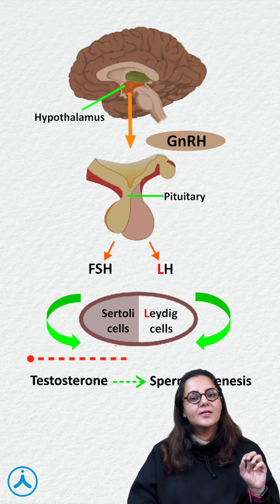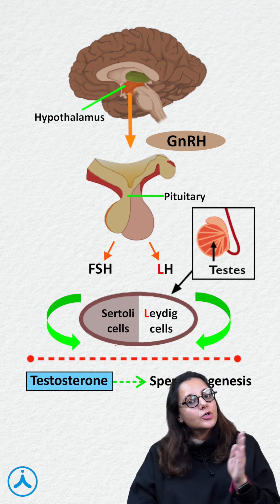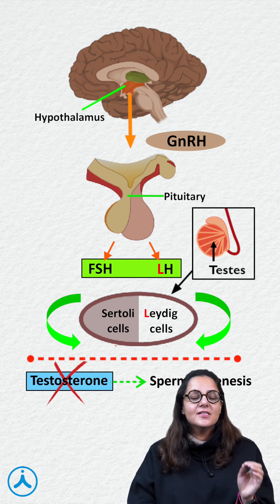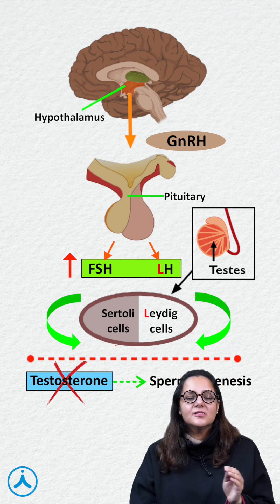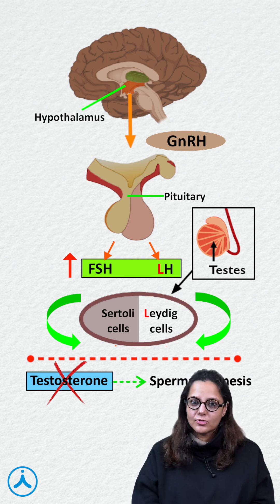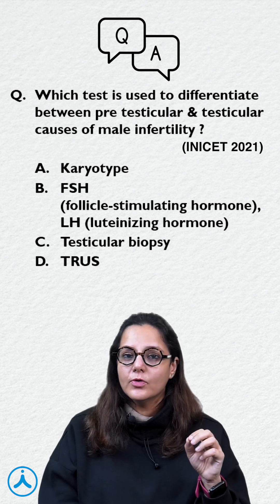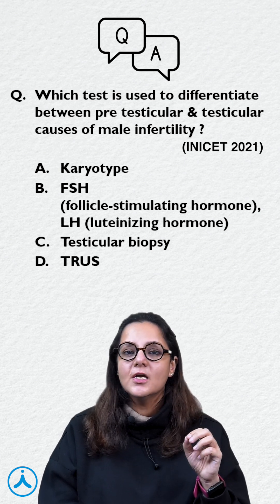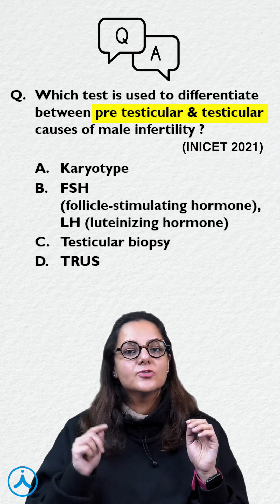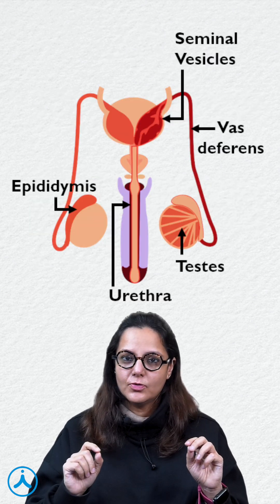If there is any problem at the level of the testis, then testosterone will not be formed, and LH and FSH will be high because there is no negative feedback from testosterone. So how do you differentiate between pre-testicular and testicular failure? It is merely on the basis of hormone levels.